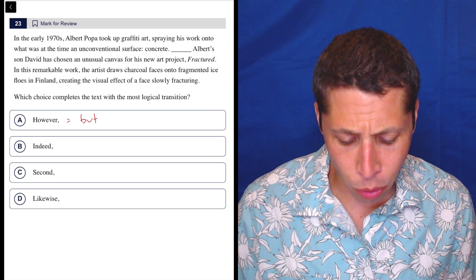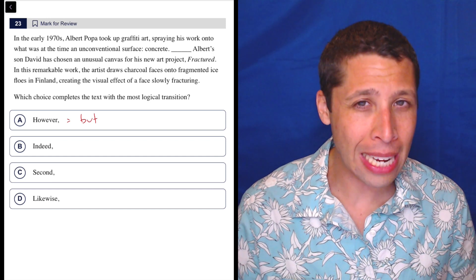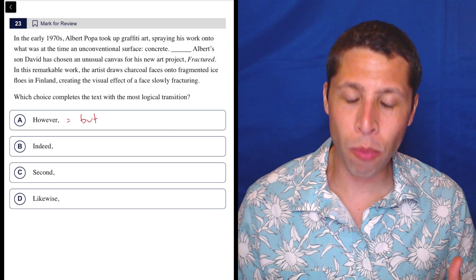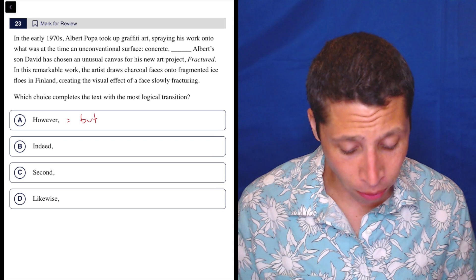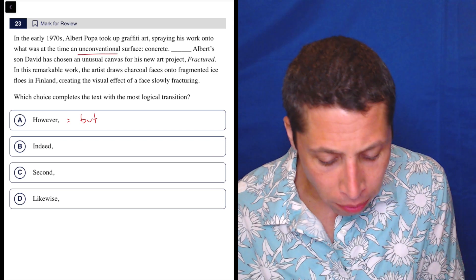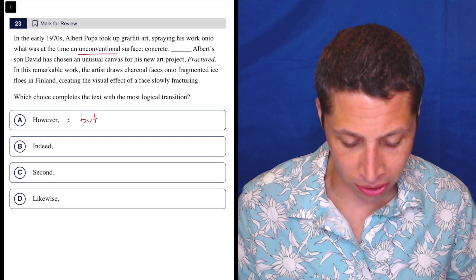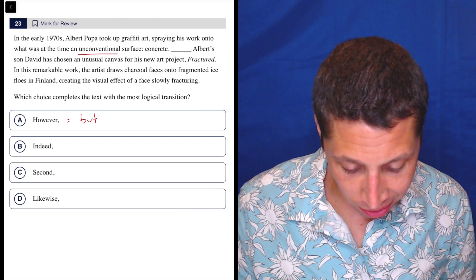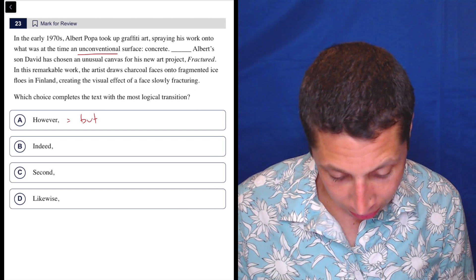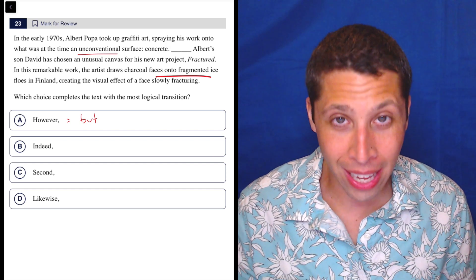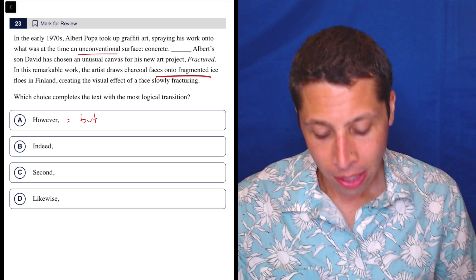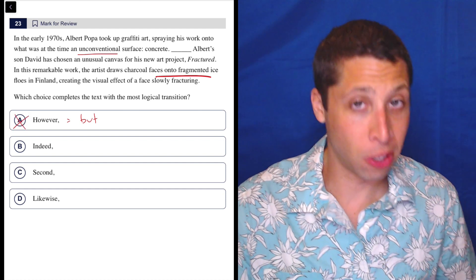Okay, well, is this a but situation? I mean, we are talking about two different things, but are they contrasting in some way? Are we trying to say that the father's art is different from the son's? I don't think so. The father is using unconventional surfaces, and so is the son. He's drawing on ice or whatever he's doing on the ice. That's also unusual. So this doesn't seem like a however situation.